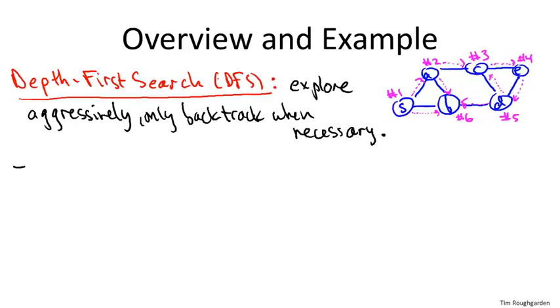So you might be wondering, why bother with another graph search strategy? After all, we have breadth-first search, which seems pretty awesome, right? It runs in linear time. It's guaranteed to find everything you might want to find. It computes shortest paths. It computes connected components if you embed it in a for loop. Kind of seems like what else would you want?